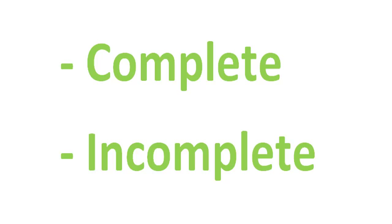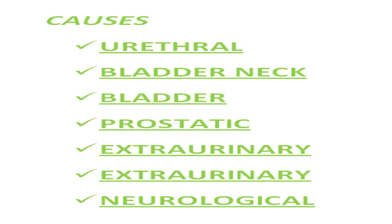The fifth type of urinary disturbance is urinary retention, which can be complete or incomplete. The complete form can be acute or chronic. Urinary retention causes include urethral causes, bladder neck causes, bladder problems, prostatic problems, extra-urinary problems, and neurological problems. First, we will talk about acute complete urinary retention.